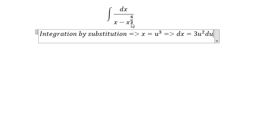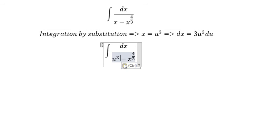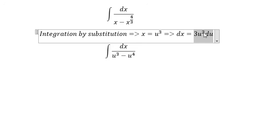And now we need to change this integral. x we change to u to the power of 3. x we have u to the power of 3 multiply with 4 over 3, you got u to the power of 4. dx we change to 3u squared du.